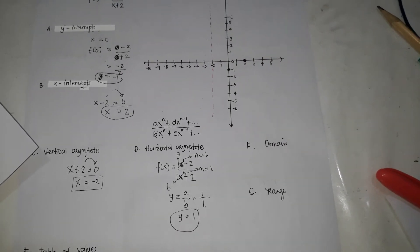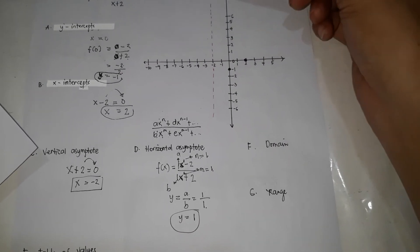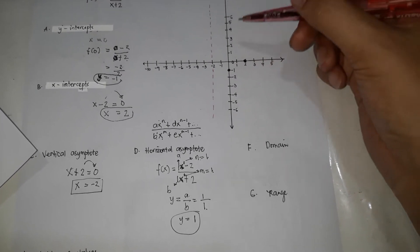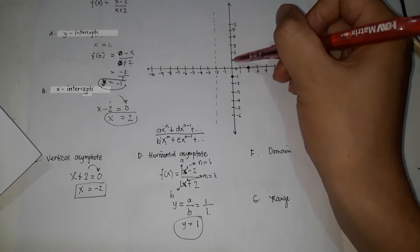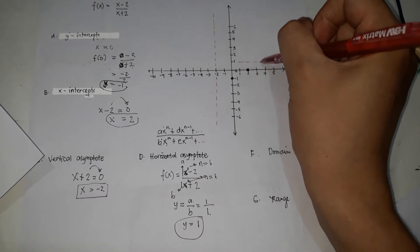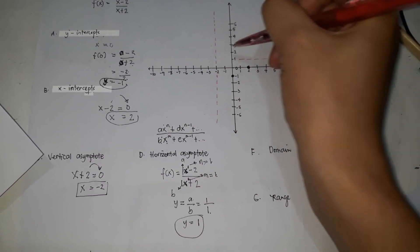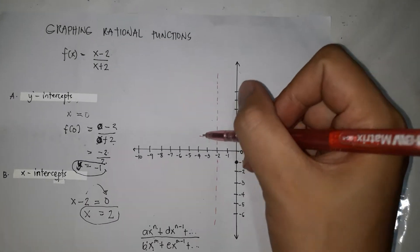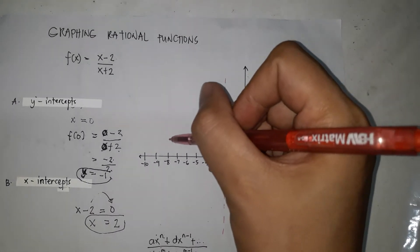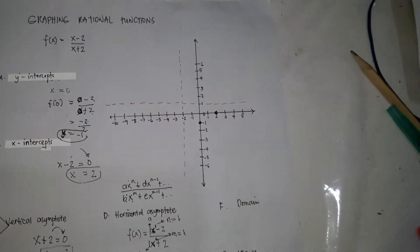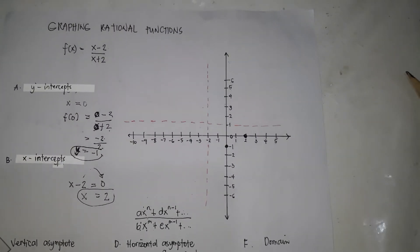So y equals 1 is our horizontal asymptote. Find 1 on the y-axis and draw a horizontal line through it. That is our horizontal asymptote.